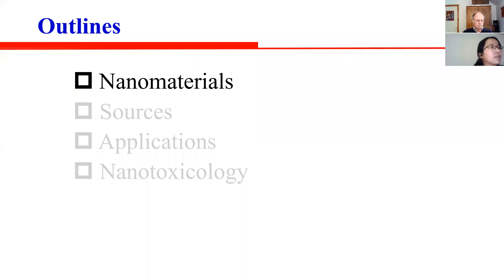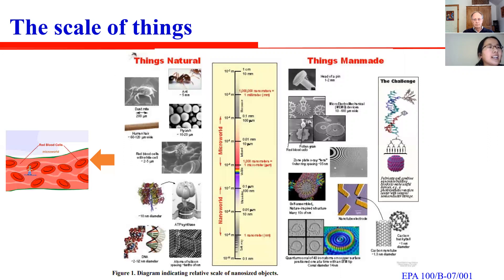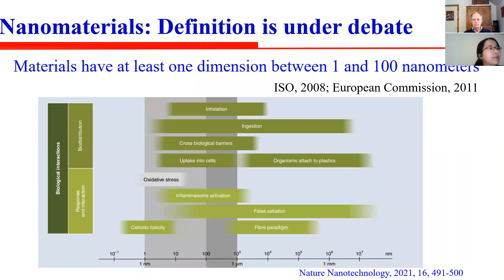What are nanomaterials? We all know that a nanometer is one billionth of a meter. That's about 100,000 times smaller than the diameter of a human hair, or 1,000 times smaller than a red blood cell, or about half the size of the diameter of DNA. This figure illustrates the scale of objects in the nanometer range.